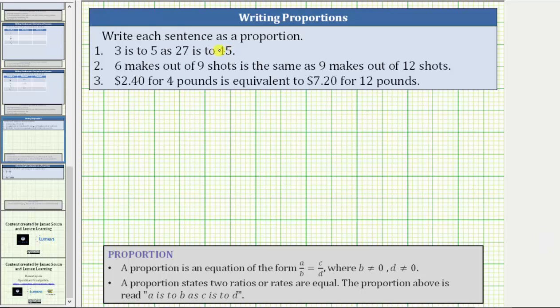We're asked to write each sentence as a proportion. Looking at the notes below, a proportion is an equation of the form A over B equals C over D, where the denominators B and D do not equal zero. This is because division by zero is undefined.